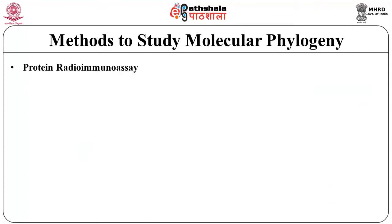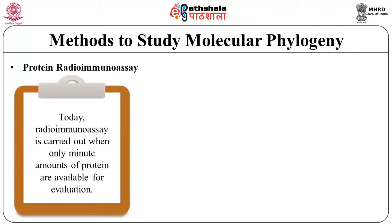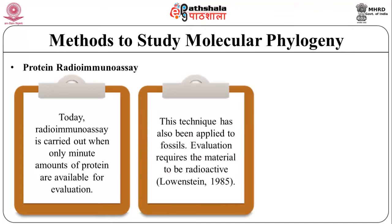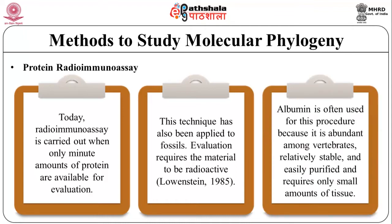Now let us discuss protein radioimmunoassay. Radioimmunoassay is carried out when only minor amounts of protein are available for evaluation. This technique has also been applied to fossils. Evaluation requires the material to be radioactive. Albumin is often used for this procedure because it is abundant among vertebrates, relatively stable and easily purified, and requires only small amounts of tissue.